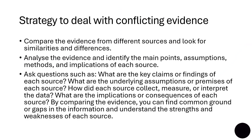When you start looking at these factors, you can draw conclusions as to why your results differ. If you have taken care of the extraneous variables and biases and are still getting conflicting results, it is time to compare evidence from different sources and look at similarities and differences. You have to analyze the evidence and identify the main points, assumptions, methods, and implications for each source — answering questions like: What were the key claims or findings? What were the underlying assumptions? How did each source collect, measure, or interpret the data? What are the implications of each source?